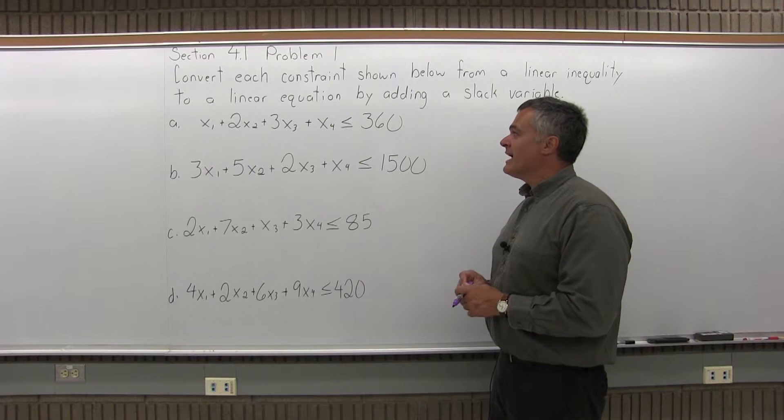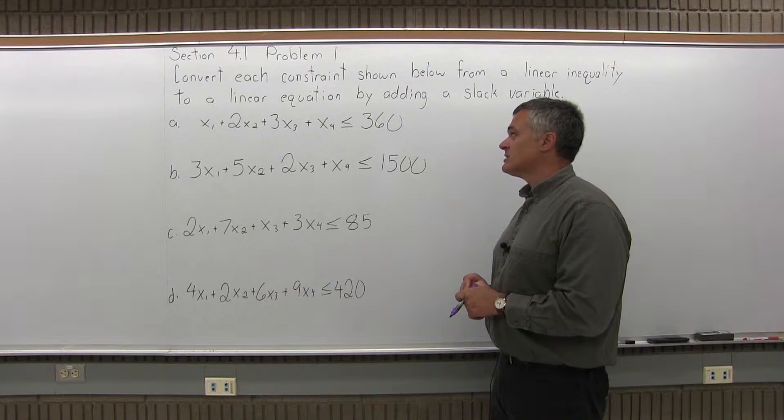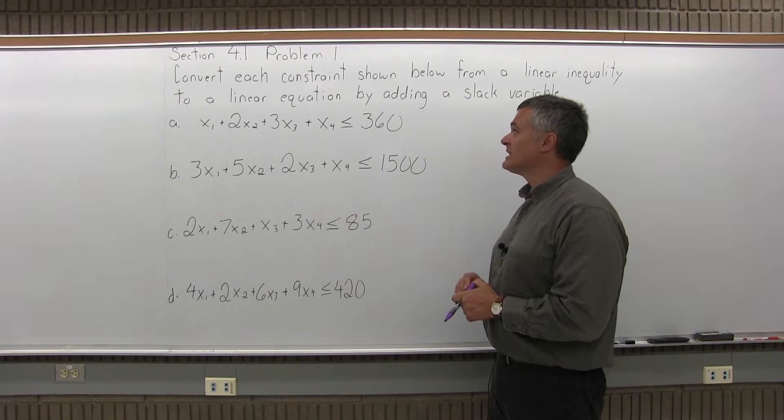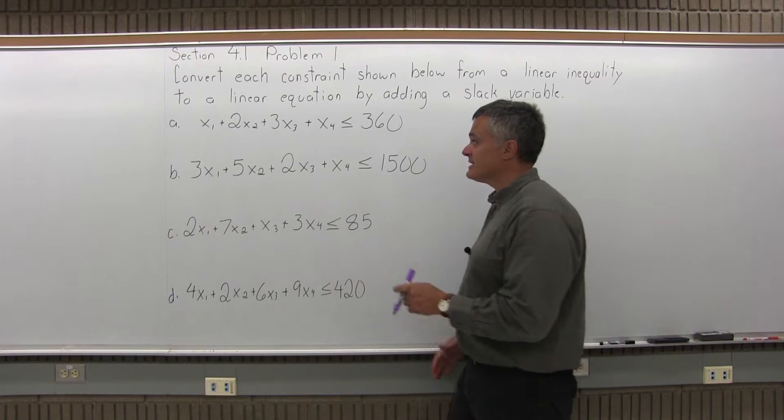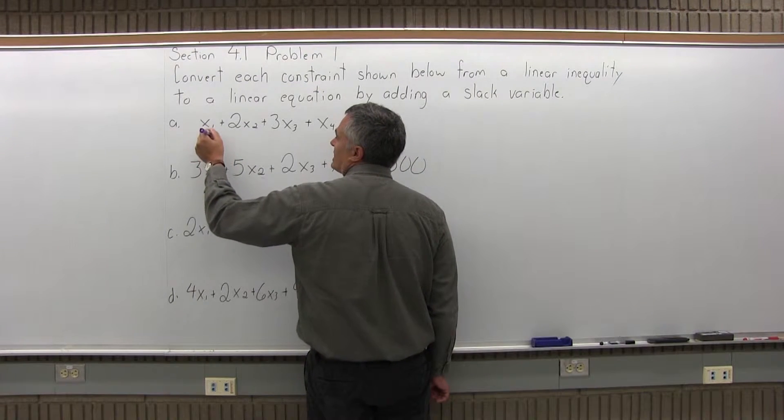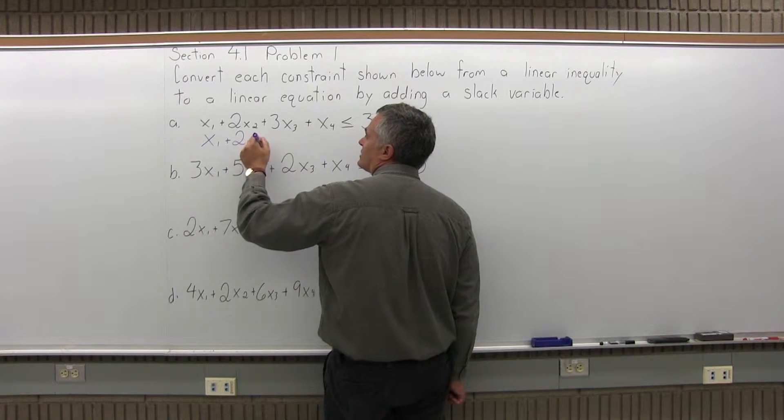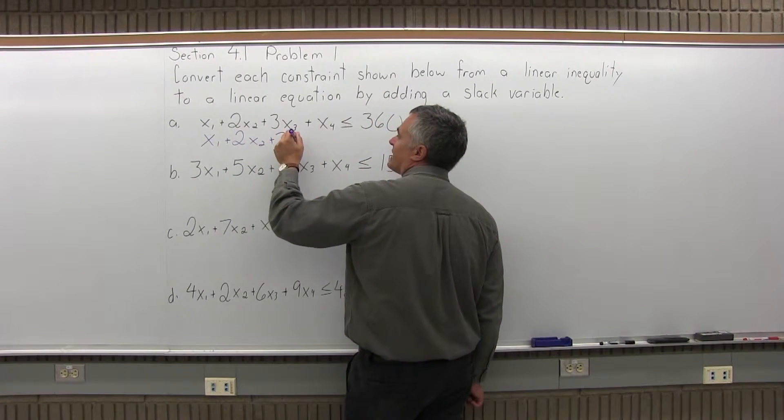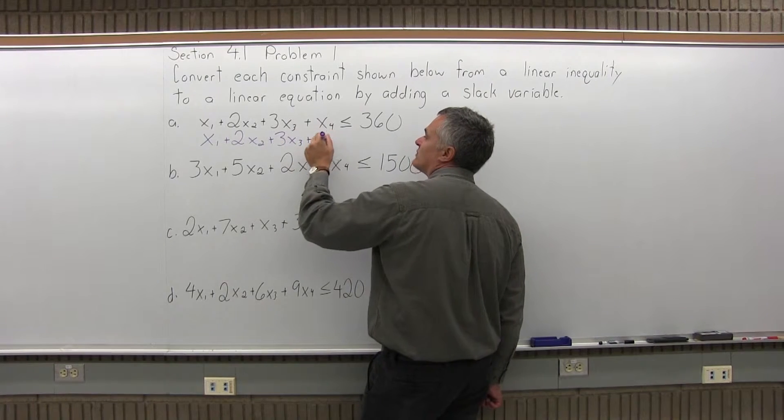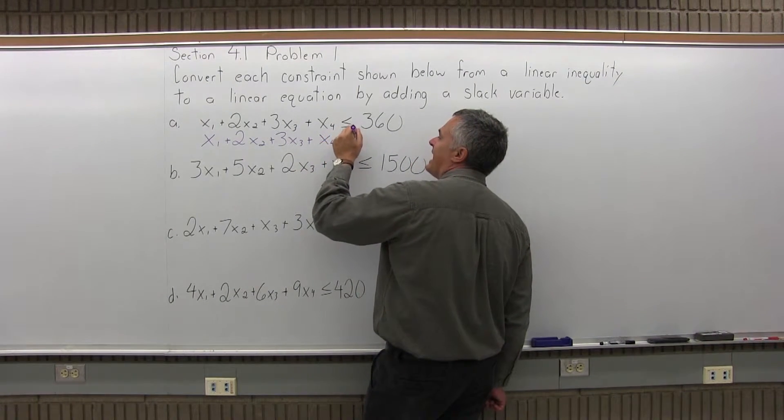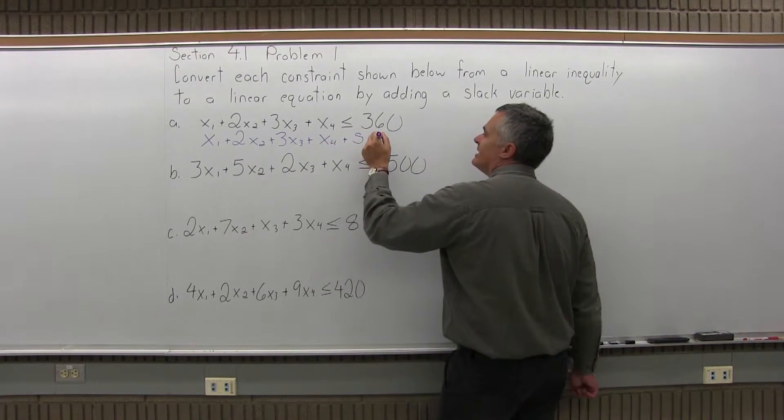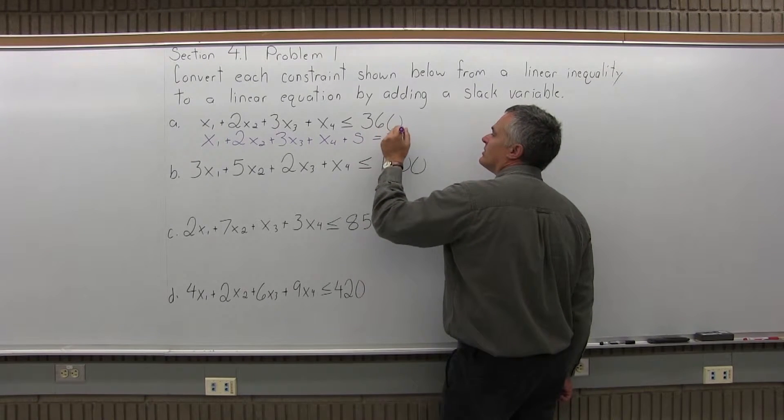So the first part, A, says x1 plus 2x2 plus 3x3 plus x4 is less than or equal to 360. So I can change that to an equation by writing x1 plus 2x2 plus 3x3 plus x4 plus s for slack is now equal to 360.